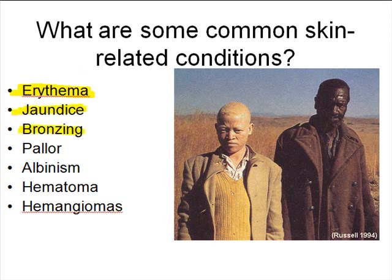Bronzing is a condition where the skin gets more of a tannish or brown color to it. That might happen from tanning, but it can also happen as a result of some different types of diseases such as Addison's disease. Pallor means having a very pale appearance to the skin, and that's usually an indication that blood flow to the surface or near the surface of the skin has been much reduced.